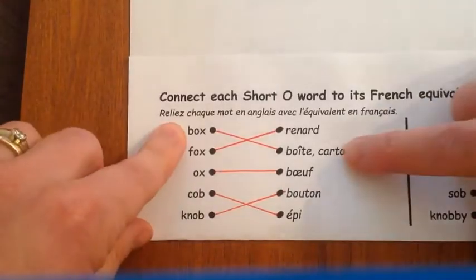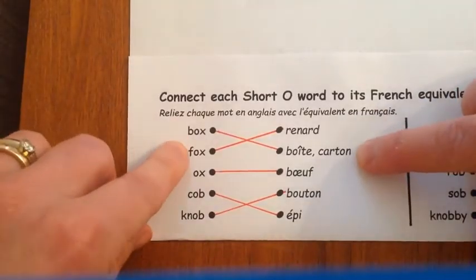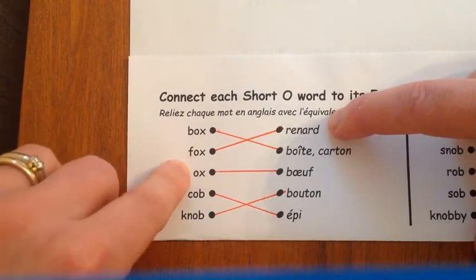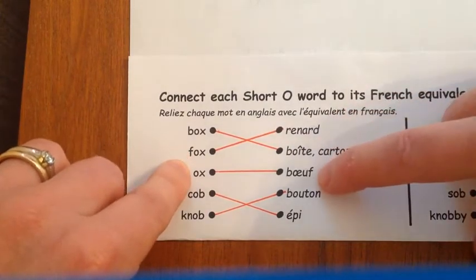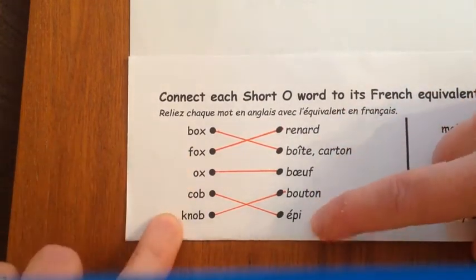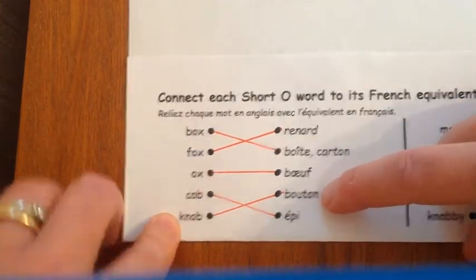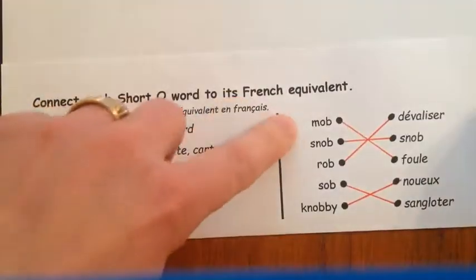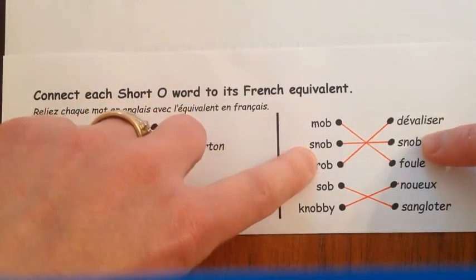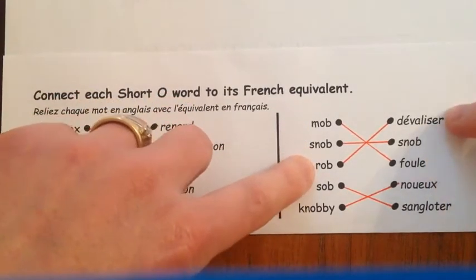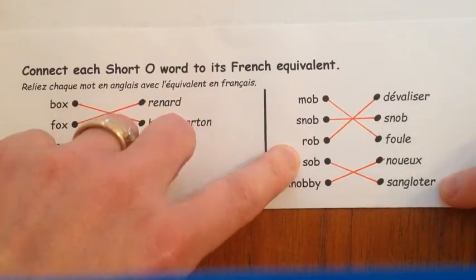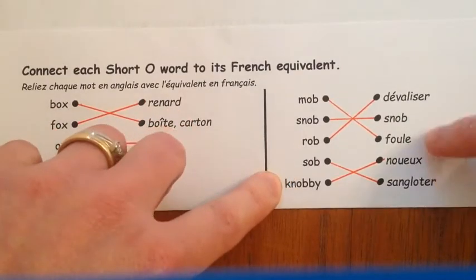Box — boîte, carton. Fox — renard. Ox — boeuf. Cob — épi. Knob — bouton. Mob — foule. Snob — snob. Rob — dévaliser. Sob — sangloter. Knobby — noueux.